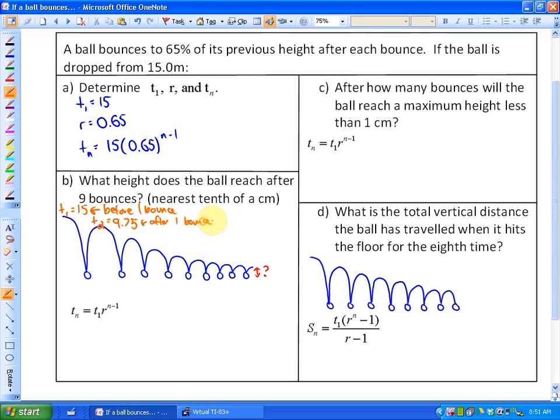And if you look at the next part, term 3, for example, would be after 2 bounces. So what you'll notice here is that term 9 is actually not after 9 bounces. If term 3 is after 2 bounces, then it's actually going to be term 10 that's after 9 bounces. So just be careful about that if you're going to use the formula.